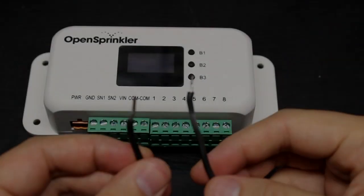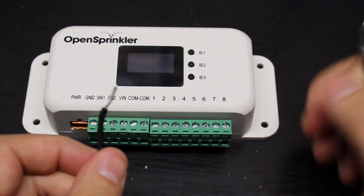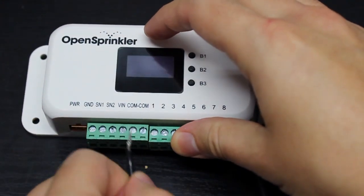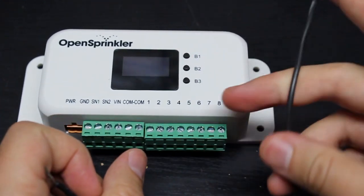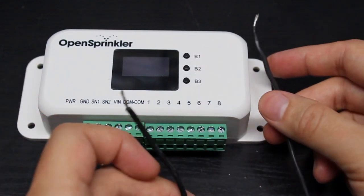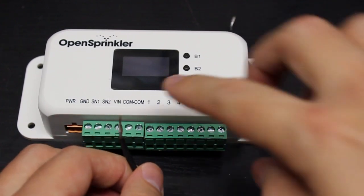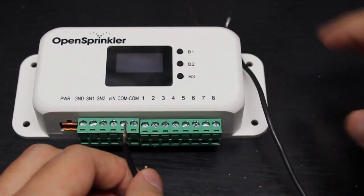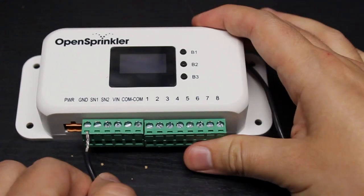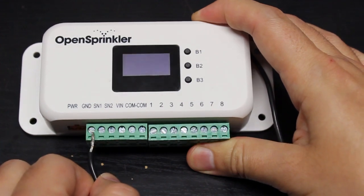To wire a sprinkler valve to the controller, generally there is a common wire. One of the wires from each sprinkler solenoid would go into the common terminal. You can use either of these two because they are the same. And the other wire would go into an individual zone port. If you have multiple zones, it's the same. Generally, one wire from each solenoid goes together into the common port, and then the other wire from each solenoid goes into an individual zone port. You should not use the ground pin for the common wire because on an OpenSprinkler, ground is not the common wire.